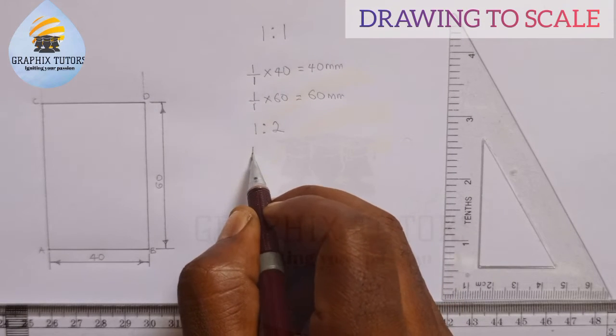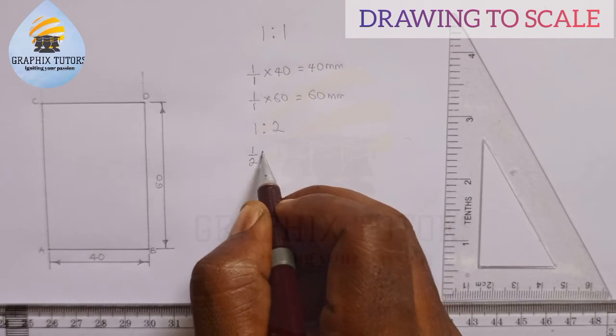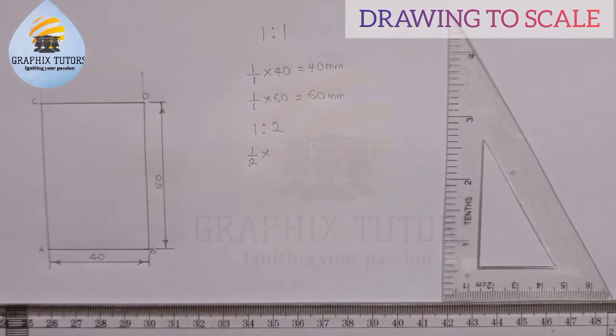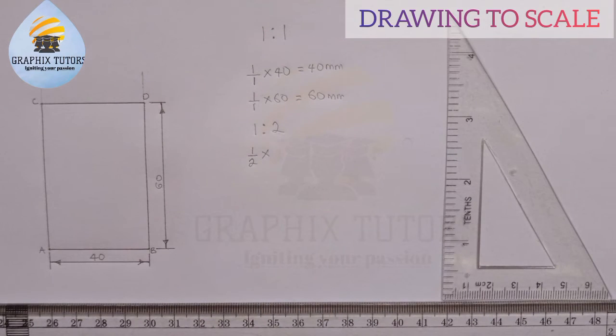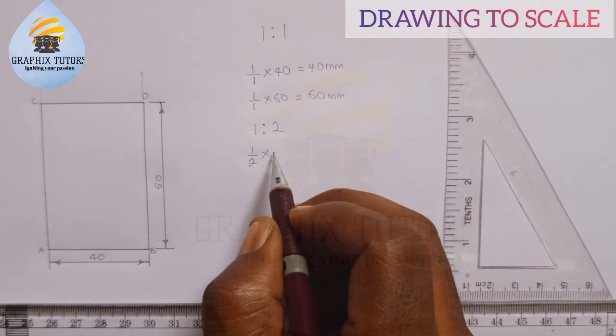When I say one in ratio two, it means one over two of the dimension that is given. One over two of the dimension that is given. So we say AB, and length of AB is 40.